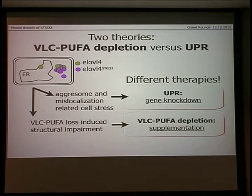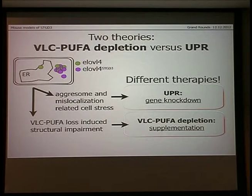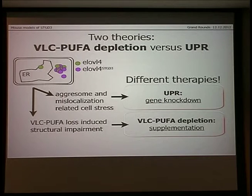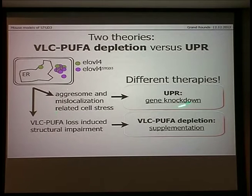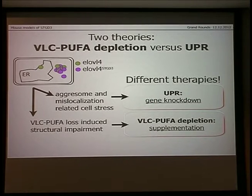The alternative theory, also accepted in the literature, is that these clumps — called agresomes — put cells under constant stress as cells try to clear them away. While doing so, a so-called unfolded protein response, or UPR, is initiated. UPR is a regulatory mechanism which, if activated for too long, eventually leads to cell death through apoptosis. If this theory is correct, giving VLC PUFAs to patients will do nothing because the clumps will still be there and the cells will still die. In this case, the only good way to treat these patients would be to knock down the mutant protein so it doesn't pull out the good protein and form agresomes.